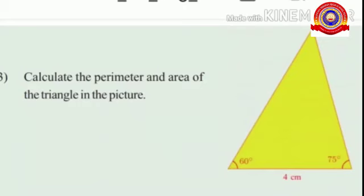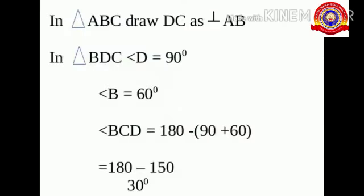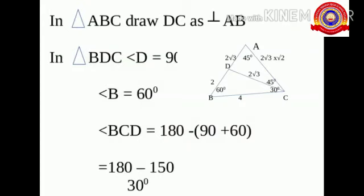Let's move to the third question. In a triangle, two angles are 60 degrees and 75 degrees, and the side included between these angles is 4 centimeters. In triangle ABC, draw DC perpendicular to AB. In triangle BDC, angle D is 90 degrees and angle B is 60 degrees. So angle BCD equals 180 minus (90 plus 60), which is 30 degrees.